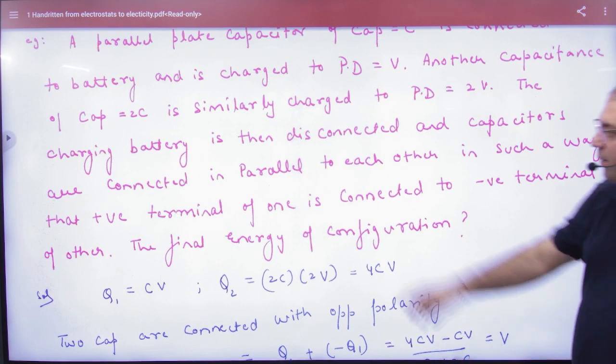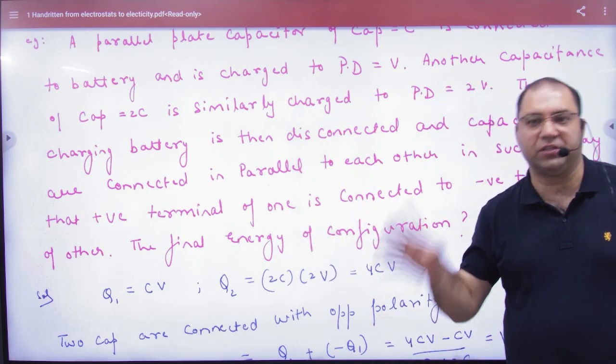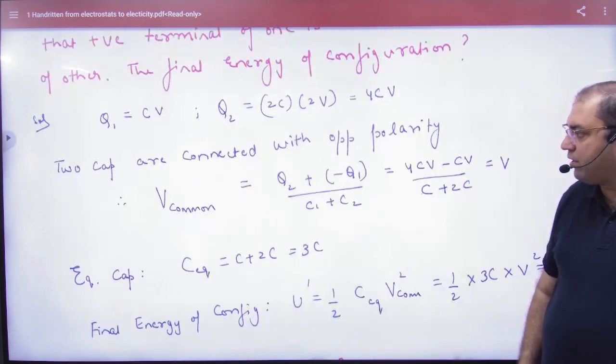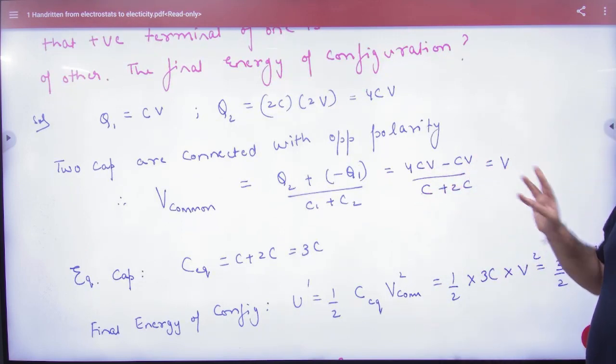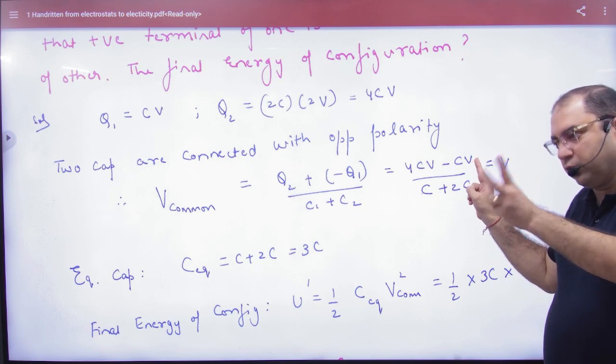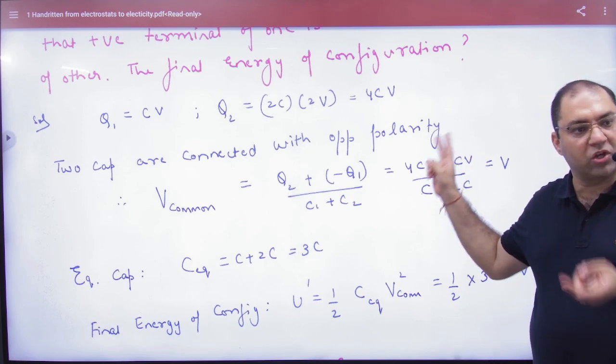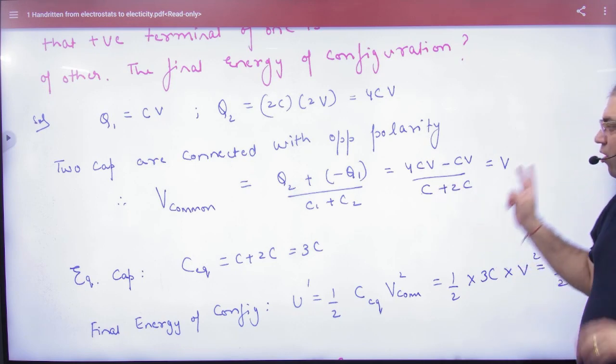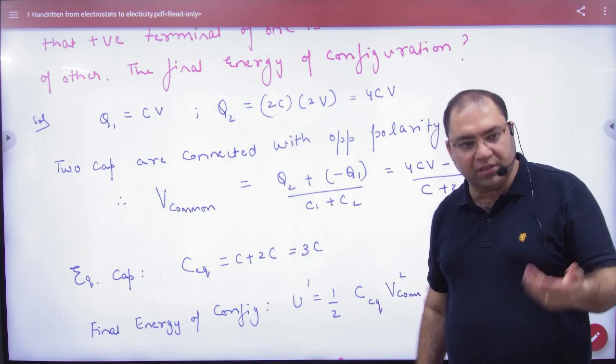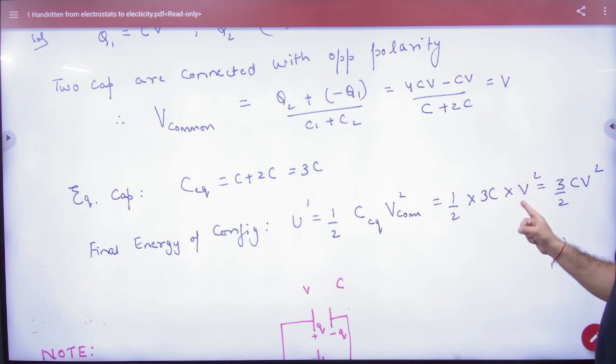So rule number 1, first of all, let's see here, common potential. So first capacitor C, charged to 2V, so 2C into 2V equals 4CV. Large capacitor small charge, small capacitor large charge. In large, divided by C1 plus C2, common potential. And since these two are connected to the parallel, it is put together 3C. For the final energy: half C equivalent into common square or half 3C into common potential V square, answer.